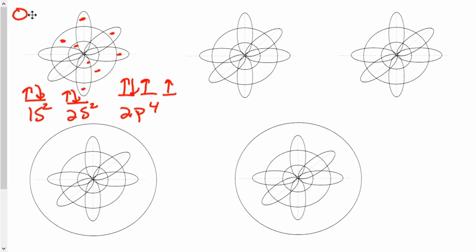So how does that correlate to the dot diagram? Well, the first two are paired here. Then I go dot, and then I put a dot there, and then a dot here, and now this one has to be paired. So there's six dots around oxygen, two pairs and then two singles. And that's how it works.